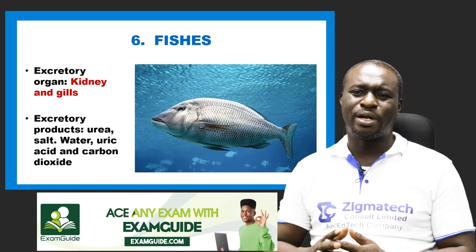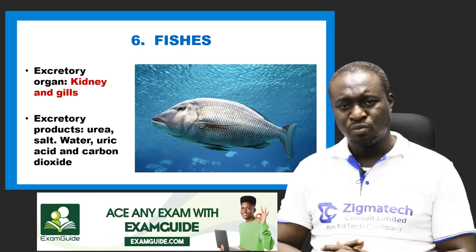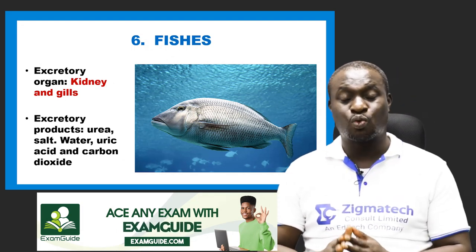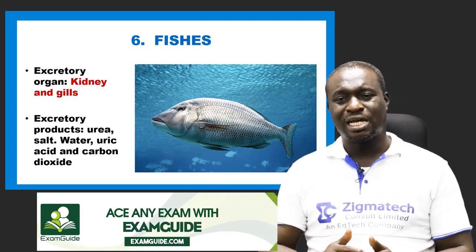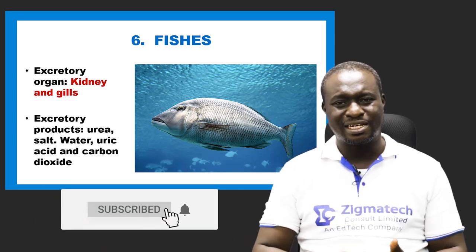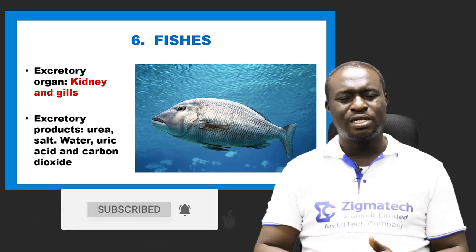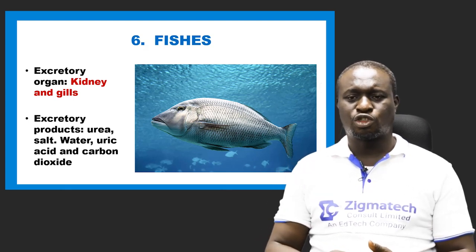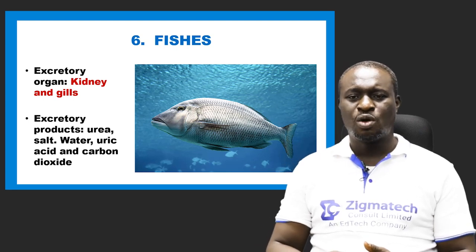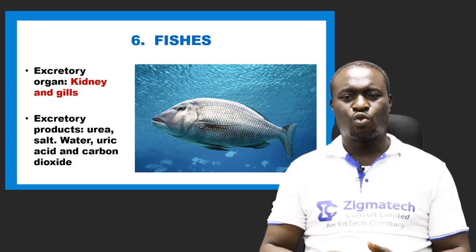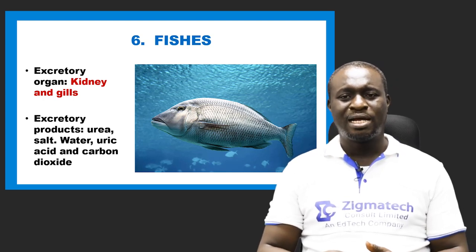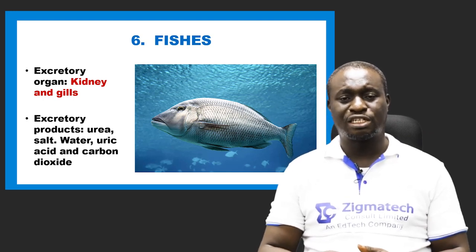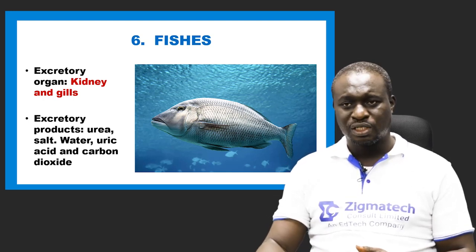Number six is pisces — the fish. The excretory organs of fish are the kidney and the gills. The gills excrete carbon dioxide, while the kidneys excrete urea, salt, water, and uric acid. Number seven is amphibians, which are more complex multicellular organisms. Their excretory organ is the kidney, and their excretory products include urea, salt, water, and uric acid.